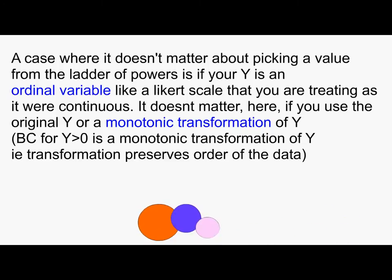Second, a case where it doesn't matter much about picking a value from the ladder of powers is if your Y is an ordinal variable like a Likert scale that you are treating as if it were continuous. It doesn't matter here if you use the original Y or a monotonic transformation of Y. So that's the right way.